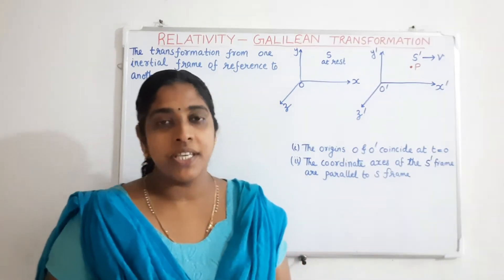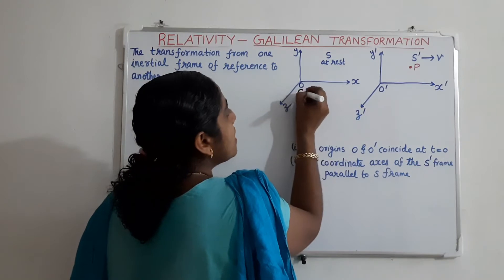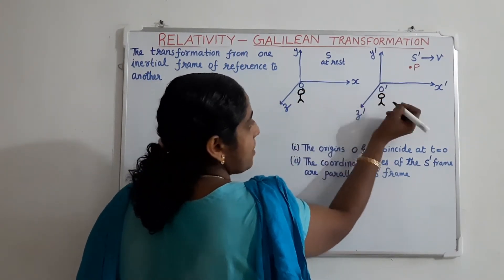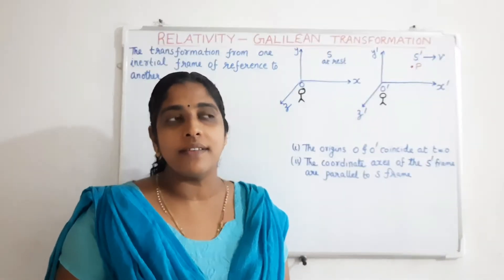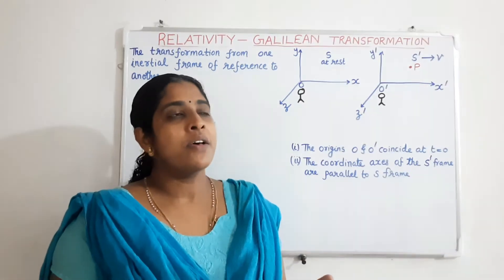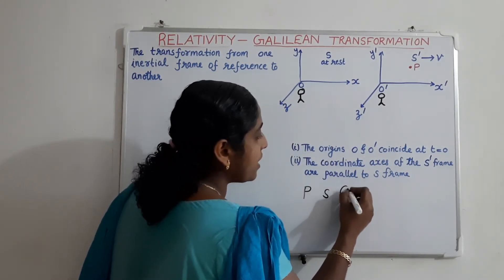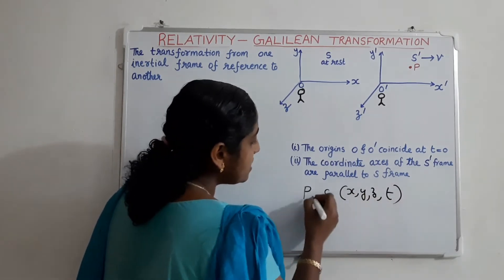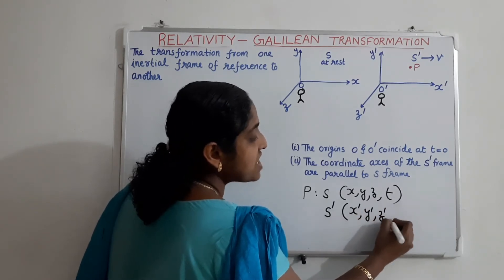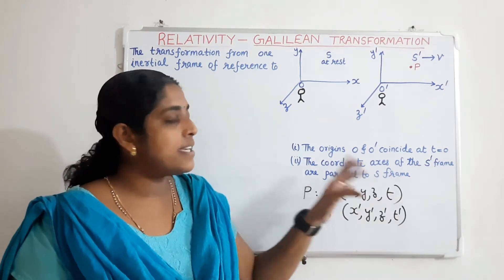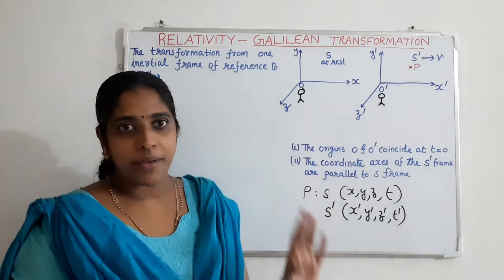After some time T, we observe an event P. There is an observer in the S frame and an observer in the S' frame, both observing this event. A physical event means something like a collision of two particles or the sudden lighting of a bulb. The event P as measured by the observer in the S frame is denoted by coordinates X, Y, Z, T, and the same event measured by the observer in the S' frame is denoted as X', Y', Z', T'. Here X, Y, Z are space coordinates and T is the time coordinate.